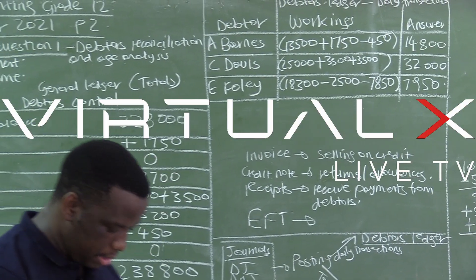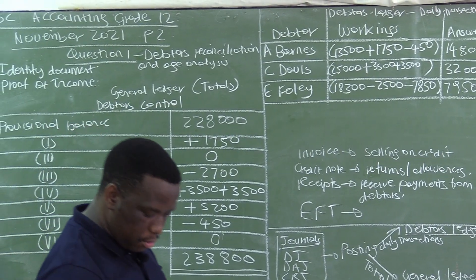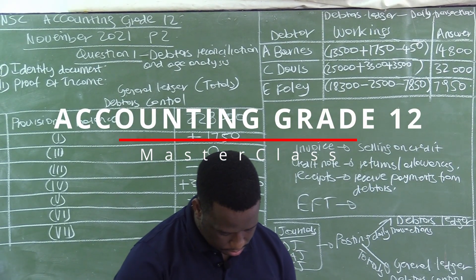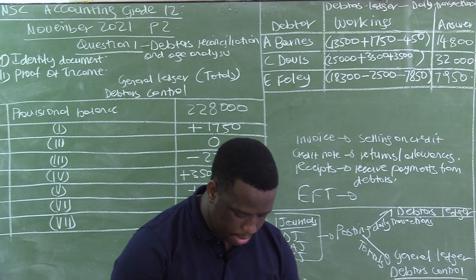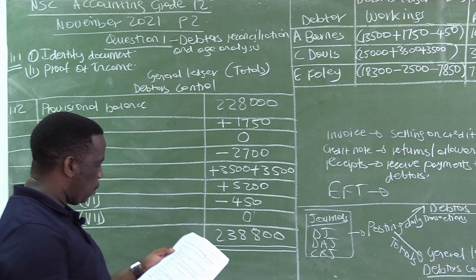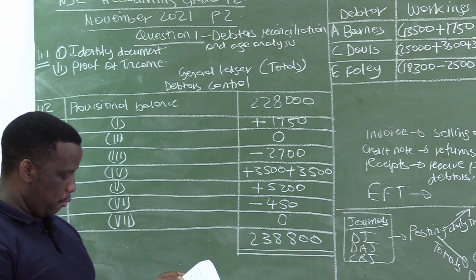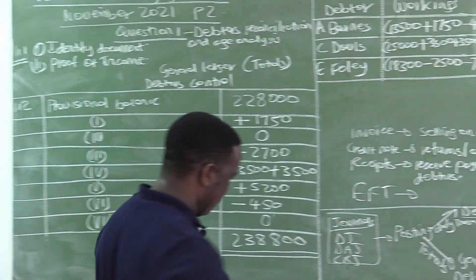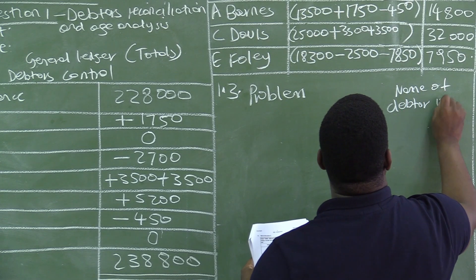We have done our calculations and are now proceeding to the age analysis. If you go back to your question paper, we have done question 1.1 and question 1.2, so we now want to do question 1.3 with figures.